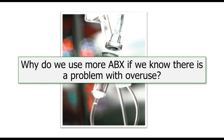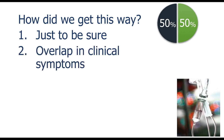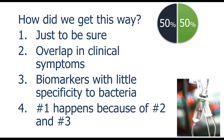Why do we overuse antibiotics? The answer is simple: we always err in favor of caution — we do it just to be sure. There are also overlapping clinical symptoms: congestive heart failure, COPD exacerbations, community-acquired pneumonia — the chest films and other findings make it difficult to know. It's hard to determine viral versus bacterial infection. Biomarkers with low sensitivity and specificity have long been a problem, leading to the 'just to be sure' overlap.